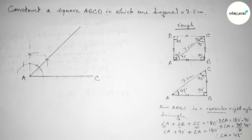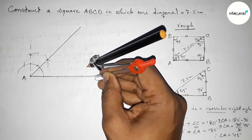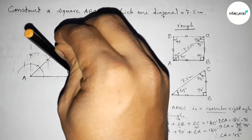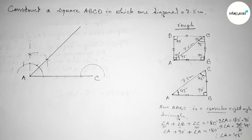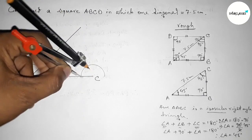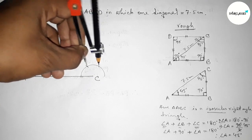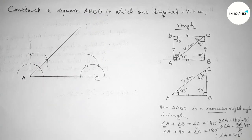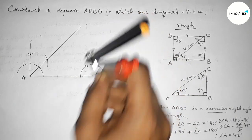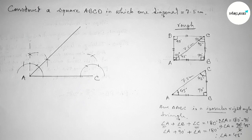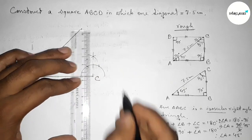Now drawing a 45-degree angle at point C using the same process. Putting the compass on point C, taking any length, and drawing an arc. With the same length, cutting arcs at the intersection points. Joining this line gives a 90-degree angle at C first.